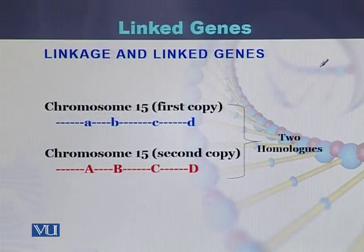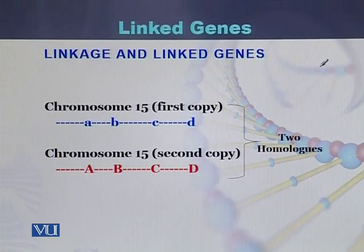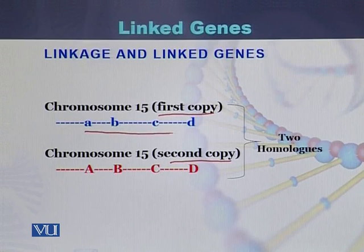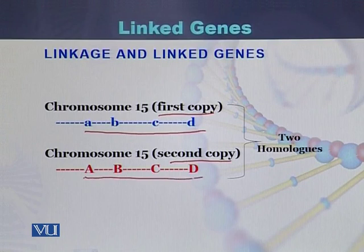We can see here how linkage and linked genes can be understood. Here is the example of chromosome 15. This is the first copy of one of the homologous chromosomes, and this is the second copy of the second homologous chromosome, because chromosomes are in homologous forms. The sequence of genes on the first copy of chromosome 15 is A, B, C, and D. While the sequence of genes on the second copy of the homologous is also written as capital A, B, C, D.